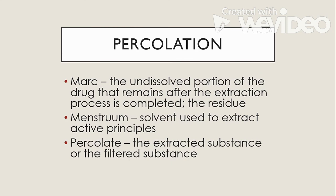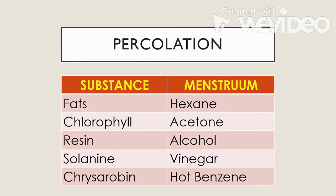We have the percolation method in the extraction of crude drugs. Under percolation, we have three terms: the marc, the menstruum, and the percolate. The marc is the undissolved portion of the drug that remains after extraction — also known as the residue. The menstruum is the solvent used to extract the active principles. The percolate is the extracted or filtered substance. The menstruum used for fats is hexane; acetone is used to extract chlorophyll; alcohol for resins; vinegar for solanin; and hot benzene for chrysarobin.